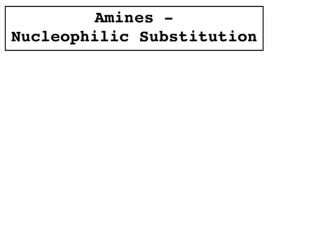I'm going to start with just ammonia and bromomethane. The first step, as you learnt in Chem 2, is that ammonia has got a lone pair — your arrows always come from a lone pair — and it's going to attack this carbon, and the bromine is going to be pushed off.